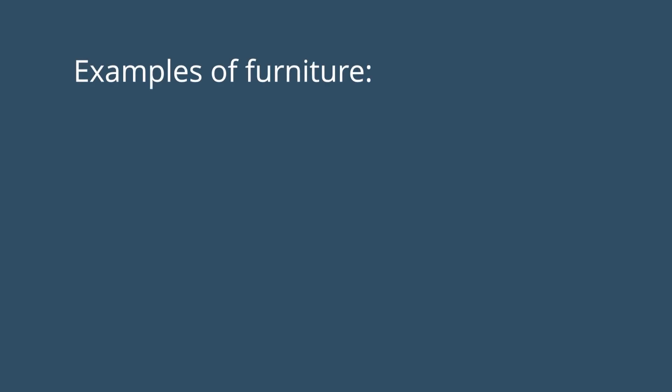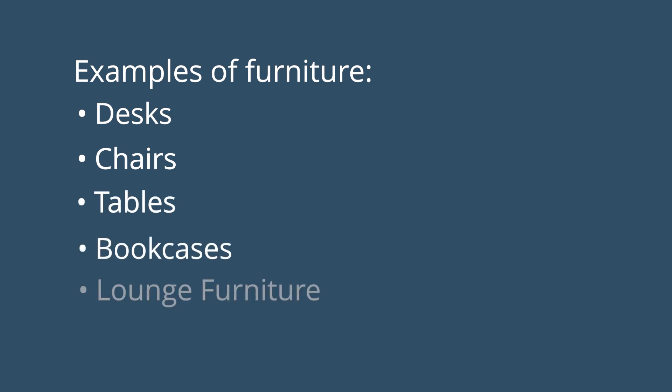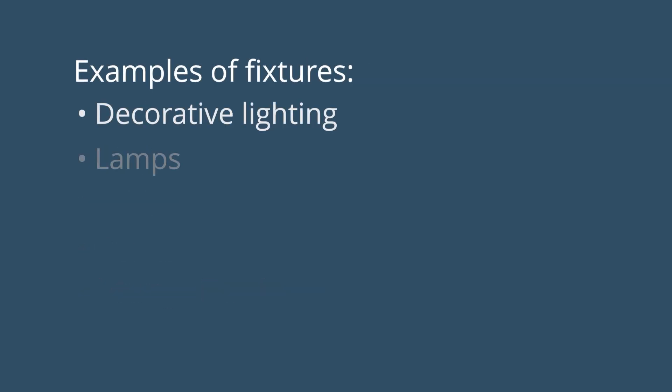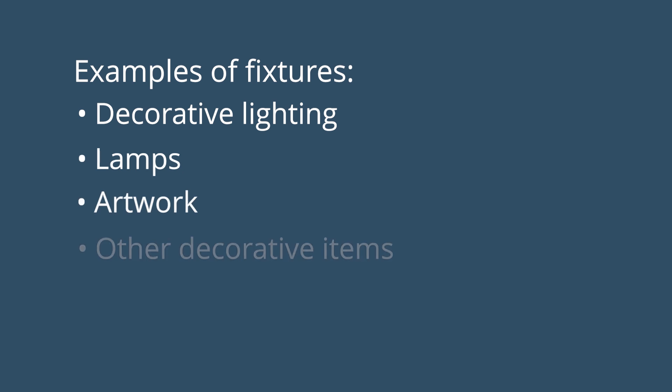Examples of furniture include desks, chairs, tables, bookcases, and lounge furniture. Examples of fixtures include decorative lighting, lamps, artwork, and other decorative items.